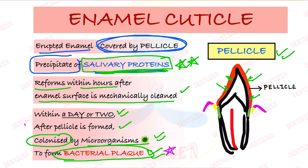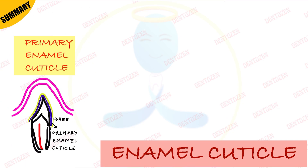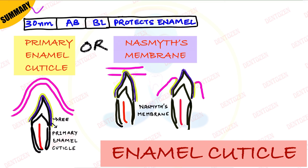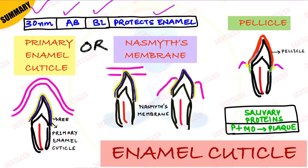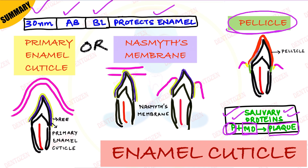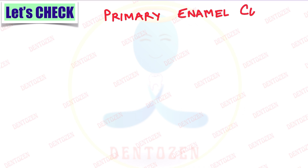Summary: Primary enamel cuticle, also known as Nasmyth's membrane, is a 30 nanometer thick delicate membrane formed by ameloblast cells. It resembles basal lamina in structure and its function is to protect the enamel. With time, when the tooth erupts in the mouth, it gets replaced by pellicle — a precipitate of salivary proteins. When pellicle gets colonized by microorganisms, it forms plaque.